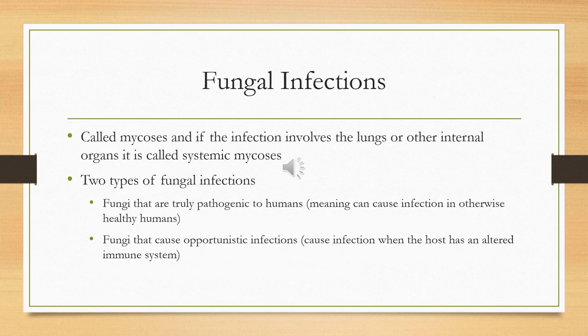Fungal skin infections are called mycosis. If in the lungs or internal organs, it's systemic mycosis. There are two types: fungi pathogenic to humans — which can infect any healthy person — and opportunistic infections, which infect individuals with a compromised immune system, such as patients with HIV.